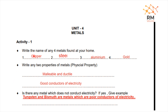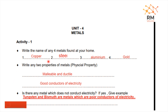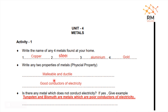The question involves 4 metals: copper, steel, aluminum, and gold. We are going to ask about 2 properties — malleable and ductile, and good conductors of electricity.